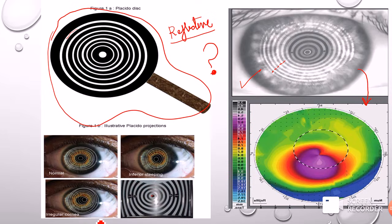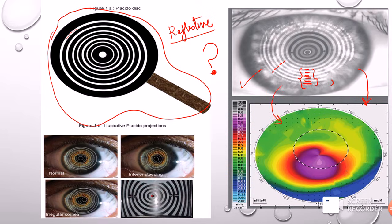The software studies the spacing between the rings: wherever the distance between rings is less — meaning the rings are more crowded — that part of the cornea is steeper. Wherever the distance is more, that part of the cornea is flatter or less curved. Using mathematical algorithms, the software converts that ring spacing into dimensions to generate a map that tells you about the anterior surface of the cornea.